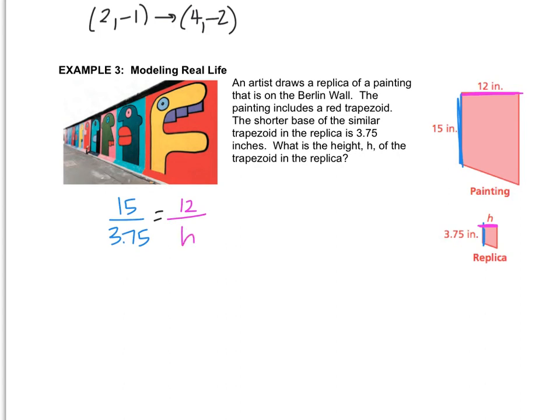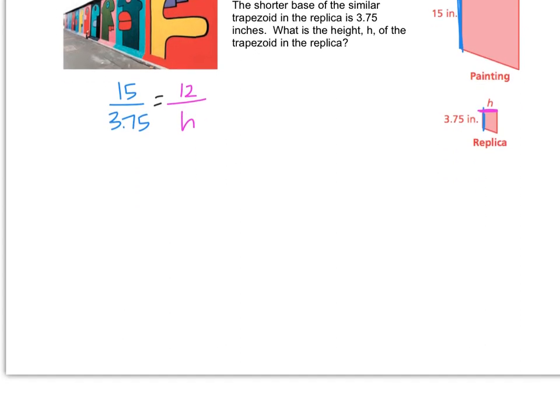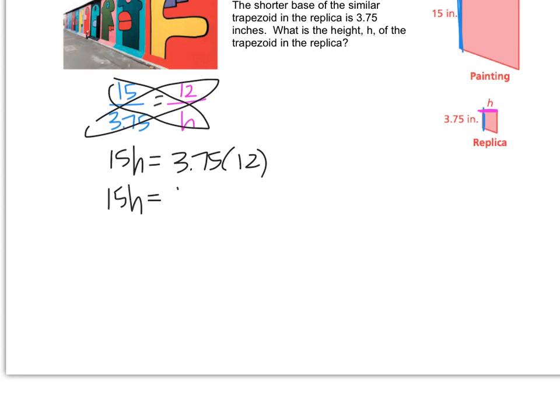And then that's going to be equal to the other ratio, which is 12 over h. Now, when you learned how to solve proportions, maybe in 7th grade, maybe even in 6th, but I know you do it in 7th, you would do cross multiplication. So you do 15 times h, and that equals 3.75 times 12. So we've got to get our calculators powered up. 3.75 times 12 is 45.